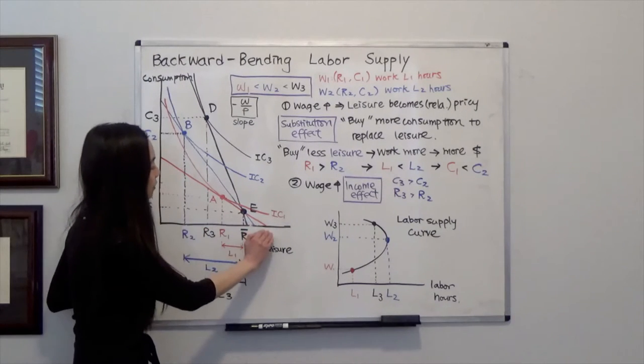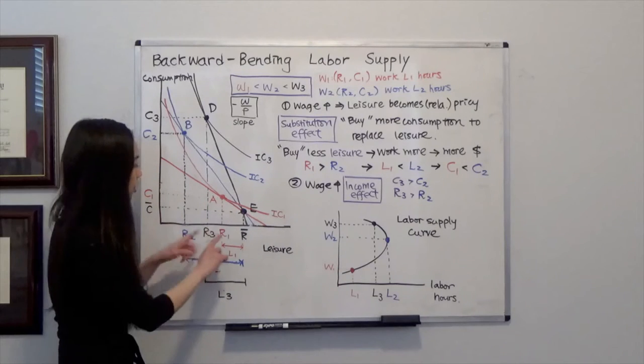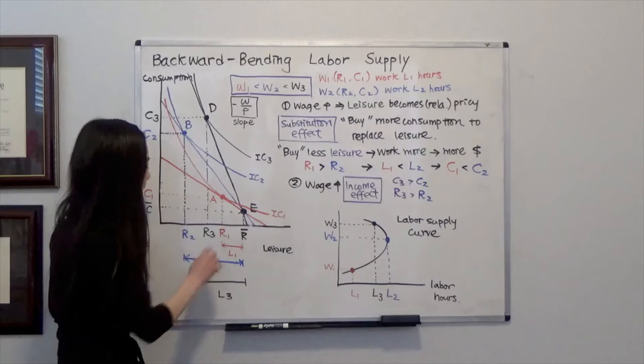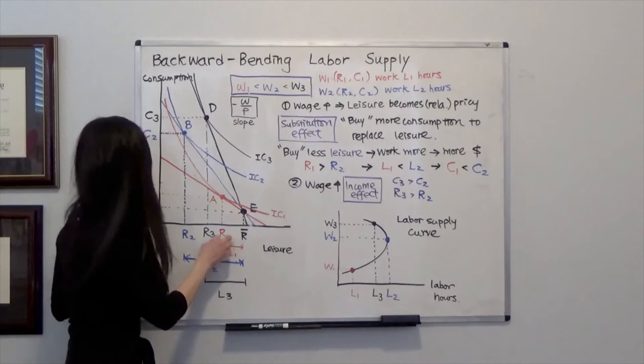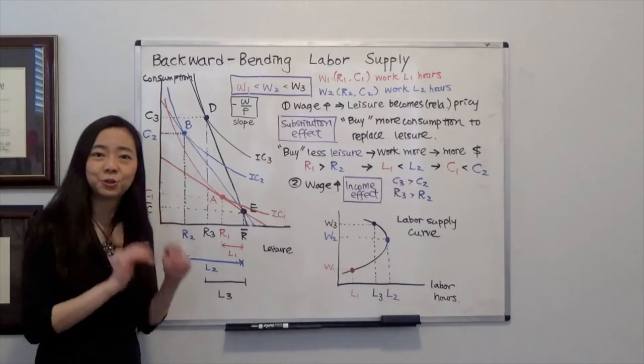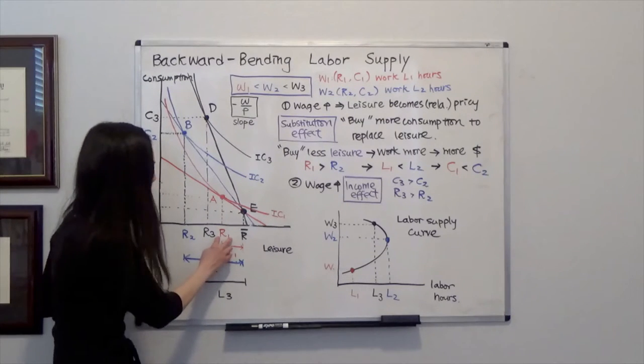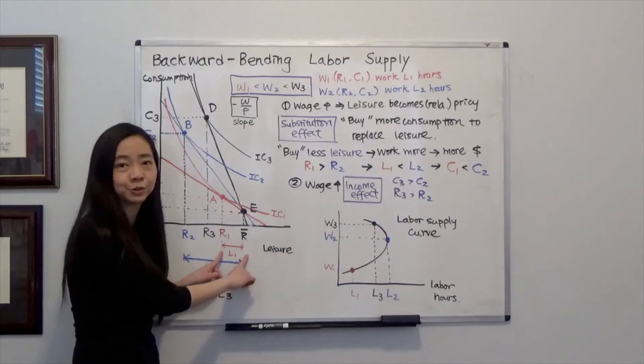Now, with that wage level, you are going to choose the combination of leisure and consumption at point A, where your leisure hours is R1, and consumption is C1. Notice that when your leisure is R1 hours, that means you spend L1 hours to work.